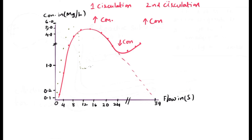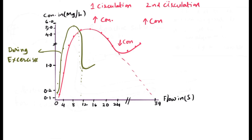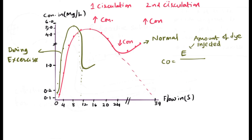During exercise, each circulatory phase completes in a very short time, around 10 seconds. The first curve indicates measurement of average concentration under normal conditions. The variable E indicates the amount of substance infused into the circulatory system through the brachial vein, and the integral of average concentration is computed from zero to the known amount in a given time. C indicates the concentration of the substance measured in the brachial artery.